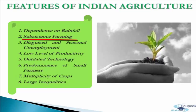The next feature is subsistence farming. The farmer produces crops only for self-consumption and hence very little marketable surplus is left. Indian farming is not too much commercial in nature and is seasonal in character. The next feature is disguised and seasonal unemployment.